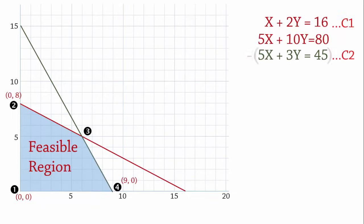And then we can subtract C2 from the new equation. So 5x cancels 5x, 10y minus 3y is 7y, and 80 minus 45 gives 35. And on dividing both sides by 7, we have y equals 5.